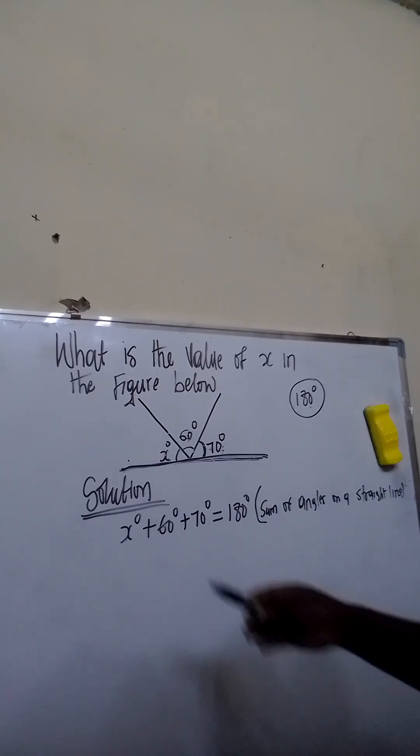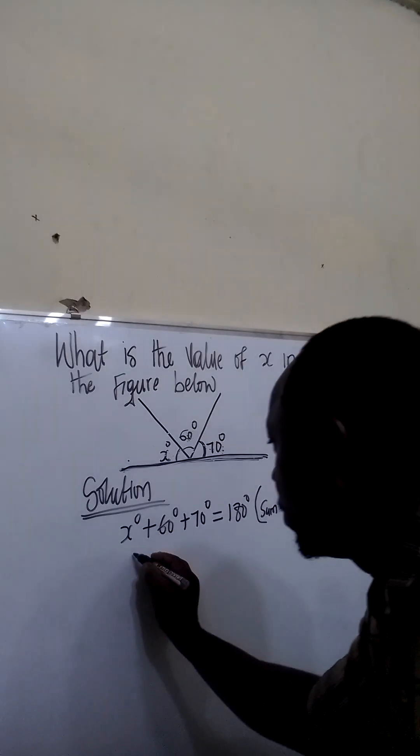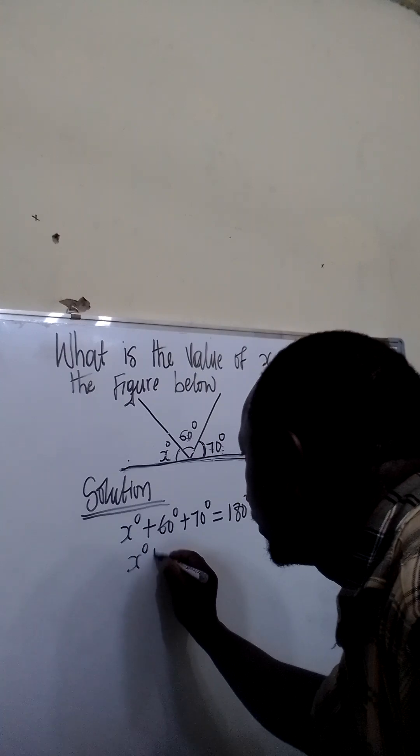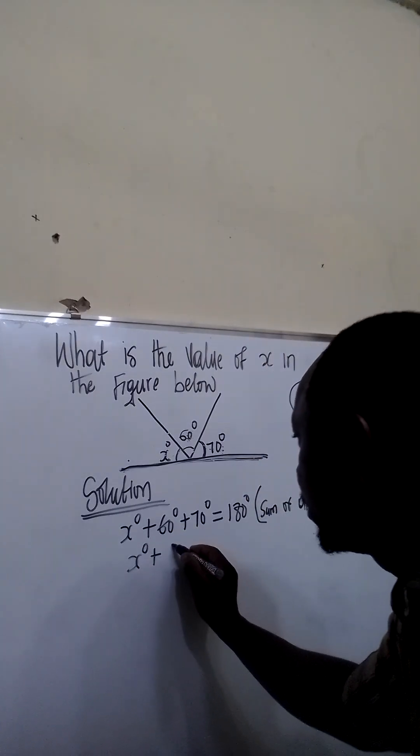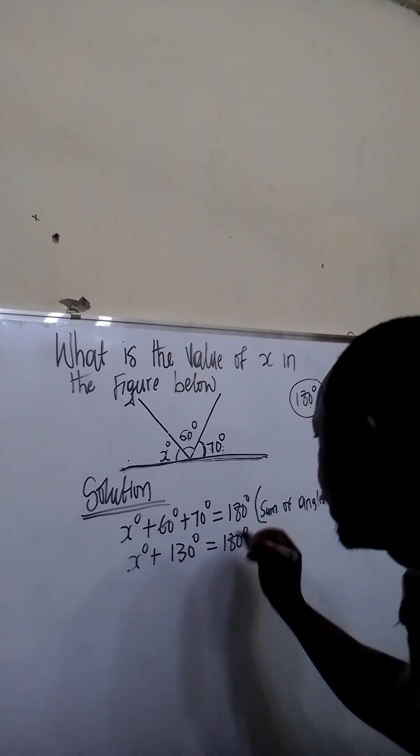The next thing to do is to add 60 and 70. This will become X degree plus 130 degrees equal to 180 degrees.